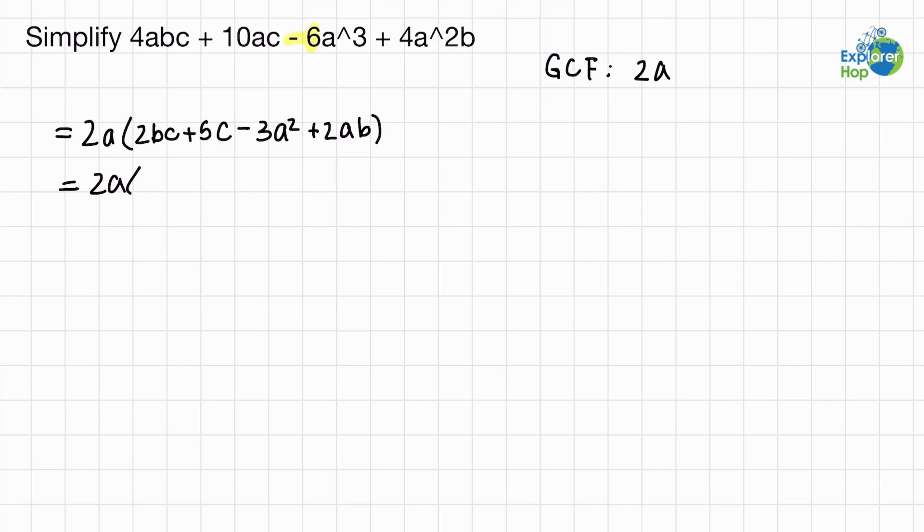So in this case, the highest power will be a squared, so we're going to put that polynomial at the beginning. And then it's going to be done alphabetically. So the next prioritized polynomial should be 2ab, and then 2bc, and last but not least, 5c.